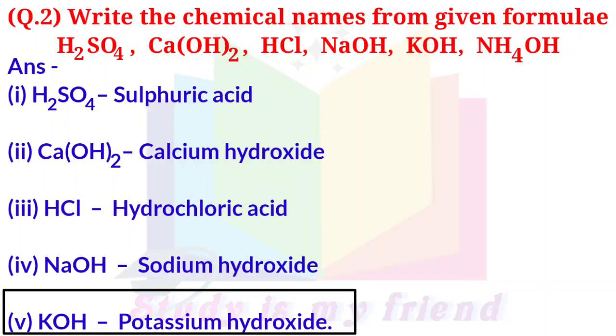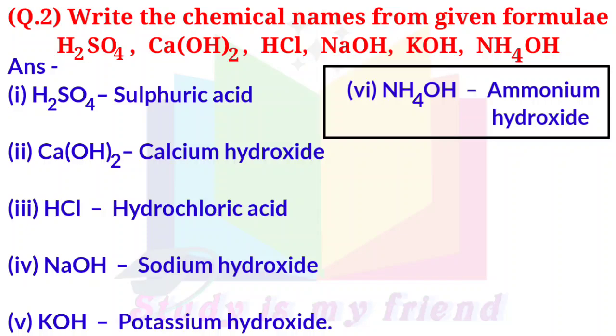KOH is potassium hydroxide. NH4OH is ammonium hydroxide.